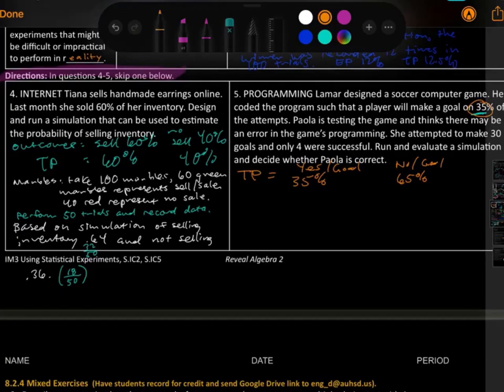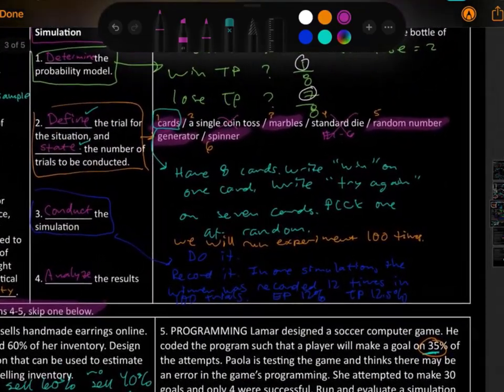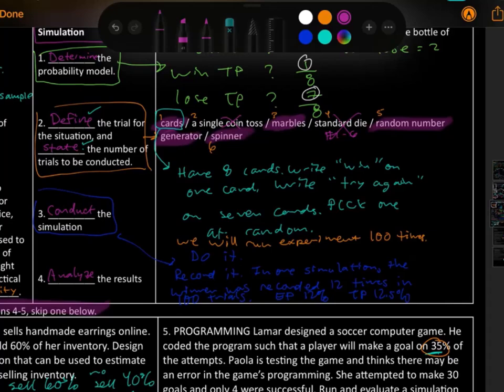And these are complementary, basically means 35% plus something equals 100%. So 65% no, you're not going to make a goal. This is the theoretical probability. The outcomes are yes you're going to make a goal or no you're not. Okay, so what kind of systems can I use here? What kind of way to model the simulation?